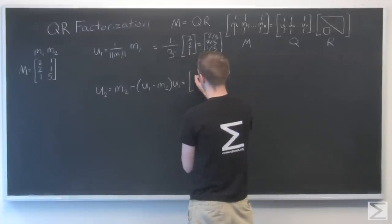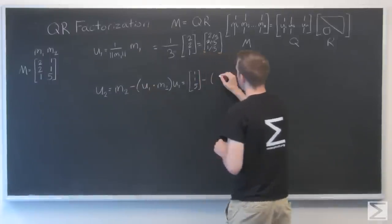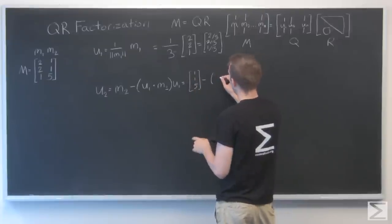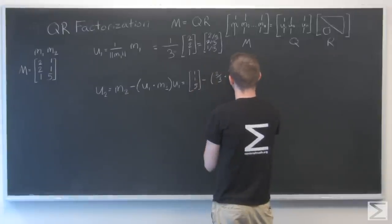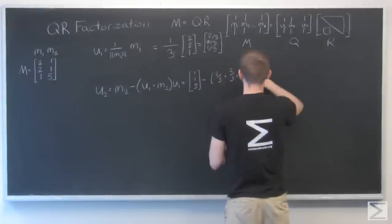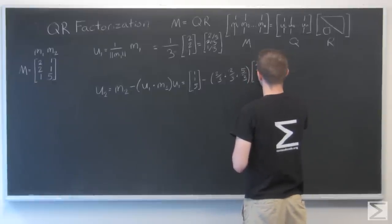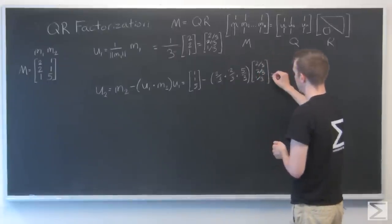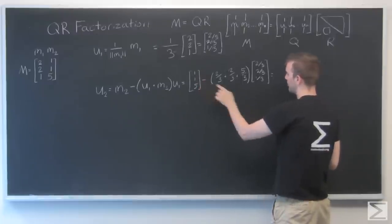So, m2 minus u1 dot m2. That's going to be 1 times 2/3, so 2/3 plus 1 times 2/3 plus 5 times 1/3, that's 5/3. That equals 2 plus 2 plus 5, that's 9. 9/3 is 3. So, that's [1, 1, 5] minus 3 times this.